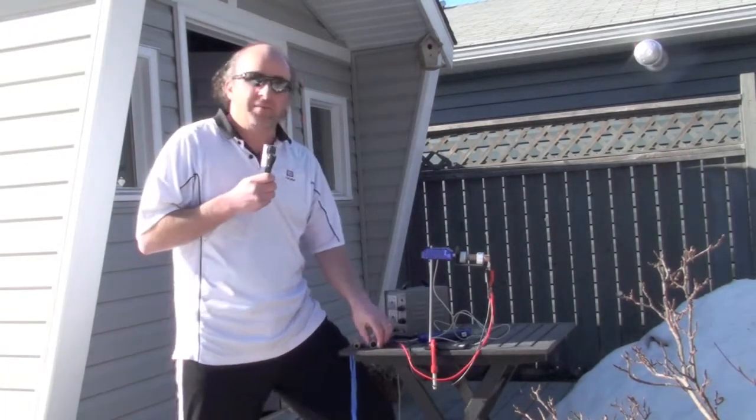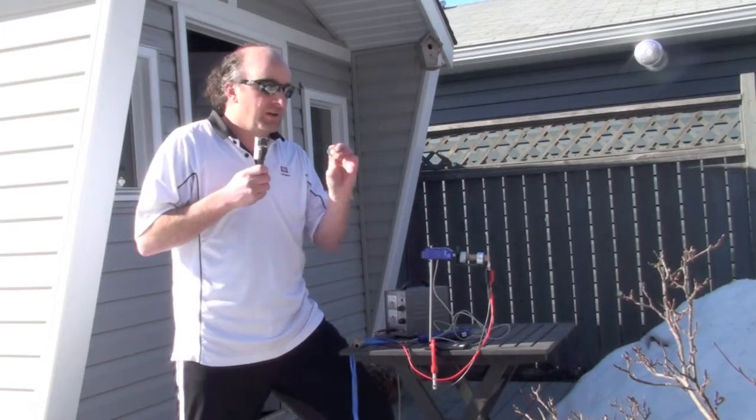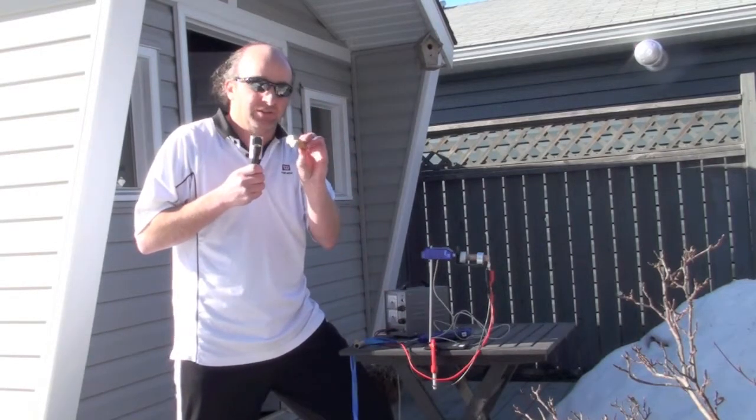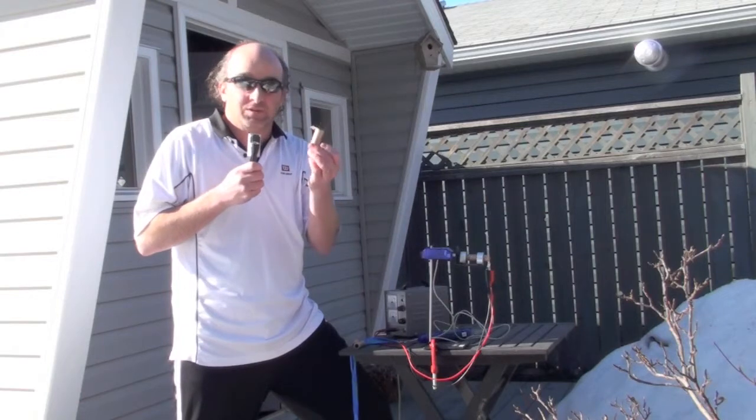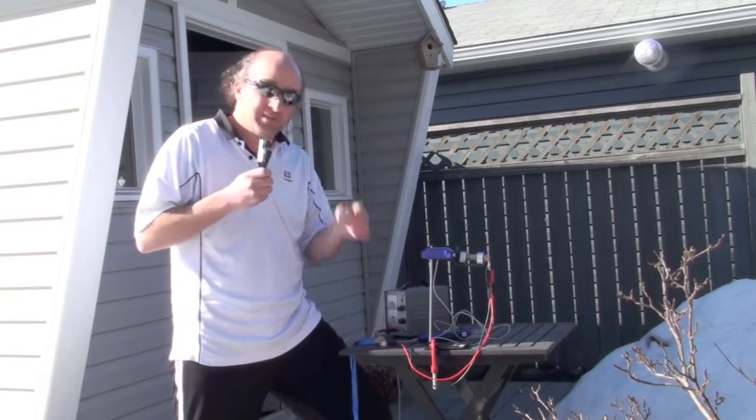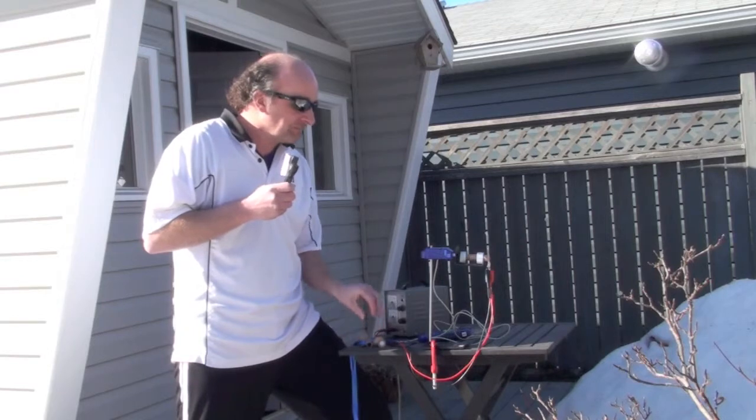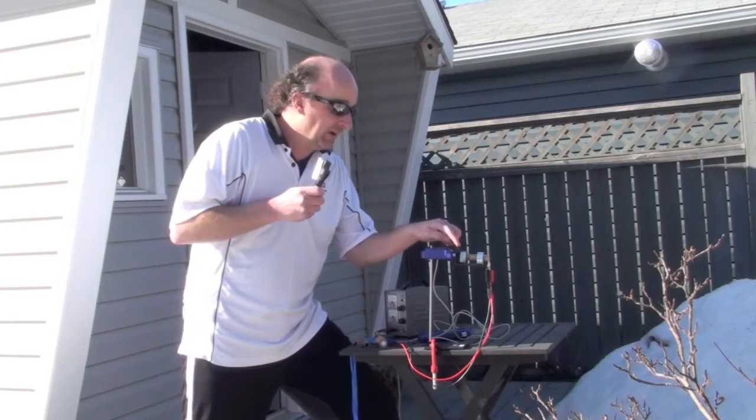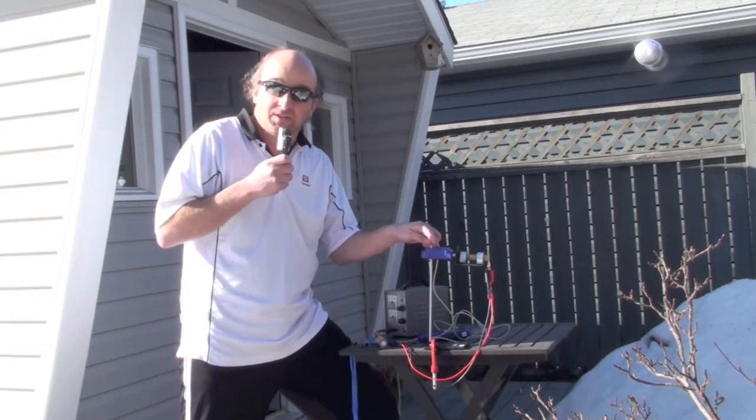Now if you know anything about model rocketry, you might know that they make different sizes of engines. I've got a D engine here and it puts out quite a bit of force for quite a bit of time. This is a C engine, and in my bracket here I have a B engine attached to a force sensor.